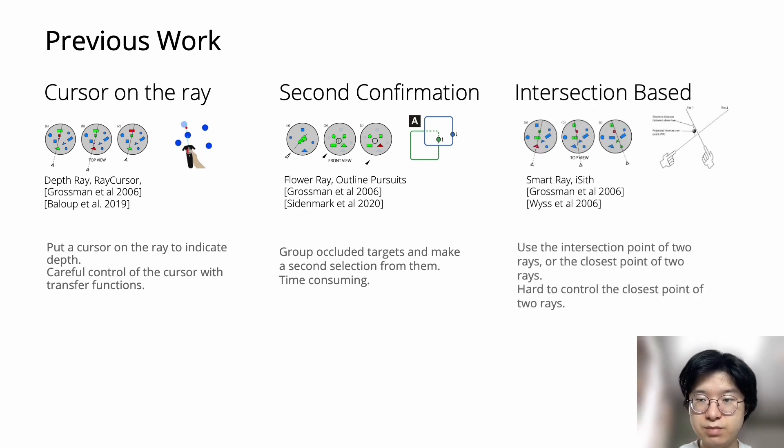Intersection-based selection was also explored by researchers. Smart Rays, for example, allow users to reselect from another angle, which again requires two careful selections. iSeeU uses the closest point of two rays, which is very hard to control, since a small angle change in height could also lead to a large displacement.